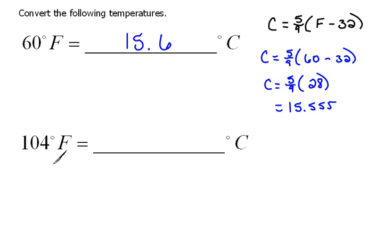Now, here again, we have another one where we're converting from Fahrenheit into Celsius. So we're using our same exact formula. So our formula here, we'd say Celsius will equal 5 ninths times, in place of Fahrenheit, we're going to have 104, 104 minus 32.